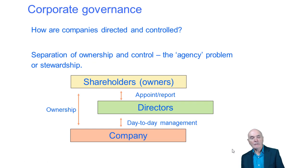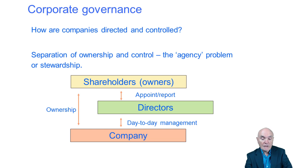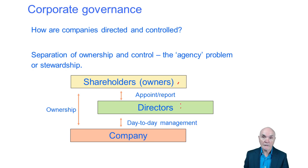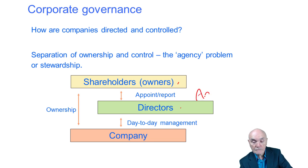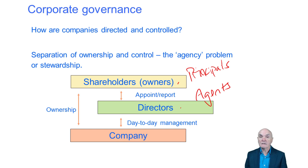Corporate governance is really asking how companies are directed and controlled. The problem arises because once a company becomes more than just a family company, the shareholders are the owners but they take very little to do with the day-to-day running. Instead it is the directors who look after the day-to-day management. Within this relationship the directors are known as the agents and the shareholders are known as the principals.